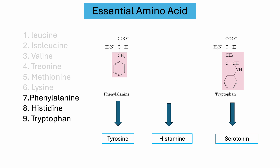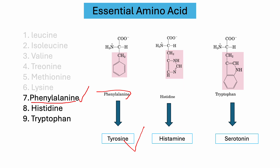Phenylalanine is very important for the production of tyrosine and also helps produce different neurotransmitters such as dopamine, which is responsible for mood and memory. Another essential amino acid, histidine, helps to produce histamine. Histamine is a neurotransmitter that plays a key role in the immune response and is also responsible for the symptoms of allergies.